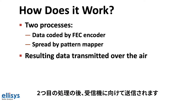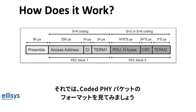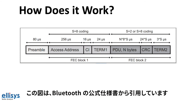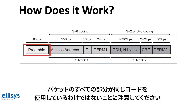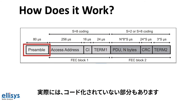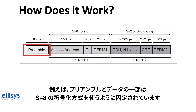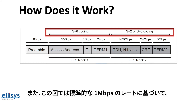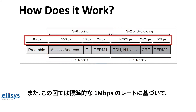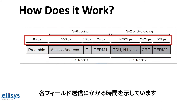The result of the second process is then transmitted over the air to the receiver. Let's take a look at the format of a Coded PHY packet — this diagram is taken from the official Bluetooth specification document and defines the packet format for both advertising and data packets. Notice that not all parts of the packet use the same coding; some parts are not coded at all, such as the preamble, and some are fixed to use the S=8 coding scheme. The diagram also shows how long it takes to transmit each field based on the coding scheme, at the standard 1 mega symbols per second rate.